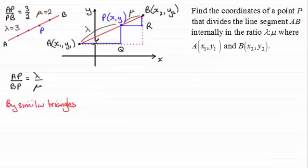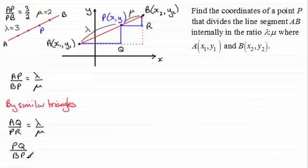When we compare the horizontal sides here, we see that AQ compared with PR must be in the ratio lambda to mu. And when we compare the vertical sides, we also find that PQ when compared to BR, that too is going to be in the ratio lambda to mu. And what I'm going to do is use these two equations which are number one and two to find the x and y coordinates of the point P.